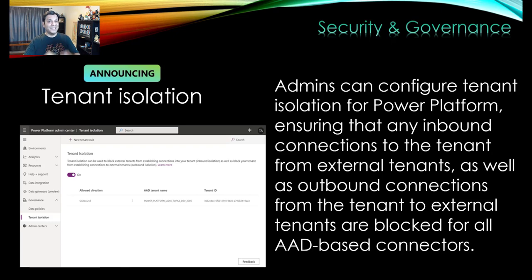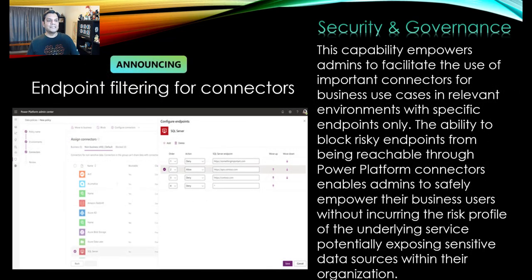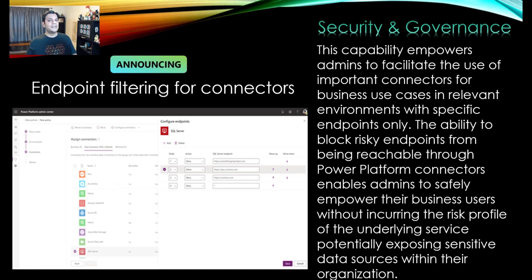There were some scenarios where I had to put in a ticket to stop that, but now they're going to bring that directly into the admin center. Next is the endpoint filtering for connectors. It's basically the whole concept of giving admins filtering on where the data source really is — not at the app level, but right down to the data source level. A great example shared at Ignite was: I want to connect to SQL, but I want to connect it down to a specific instance of SQL at a granular level. This really helps because it can block risky endpoints and prevent exposure of sensitive data at that granular level.